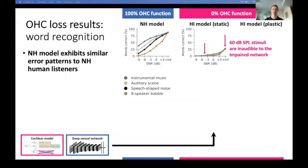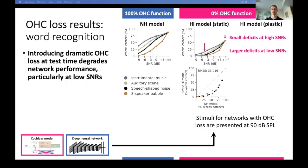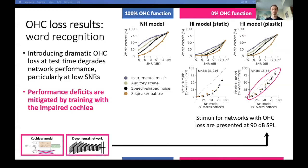We now take that same network and switch in the cochlear model with outer hair cell loss. With the same stimuli the network's performance tanks. Of course, in an experiment with hearing impaired people it is important to present stimuli loudly enough to hear, so we make the stimuli 30 decibels louder to put them in the audible range. We see the network can still do the task with the impaired ears, but not as well as with healthy ears. Consistent with hearing impaired humans, performance is still pretty good with no noise, but rapidly falls off as the noise level increases. Retraining the network with the impaired ears produces a remarkable recovery — performance is almost as good as the normal hearing model — indicating that the peripheral representation following outer hair cell loss does actually contain sufficient information to support close to normal hearing-level performance.